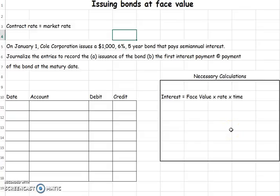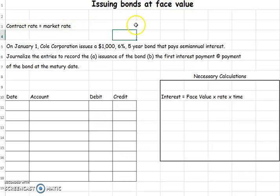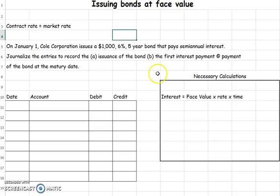Now let's see how we would journalize the issuance of a bond. We're going to start with the most simple one, which is when we issue bonds at face value. This would mean that our contract rate — the rate that is written on the bond — is the exact same rate that we can get out there in the market. So our contract rate equals our market rate, which means we're going to issue it at face value, at 100%.